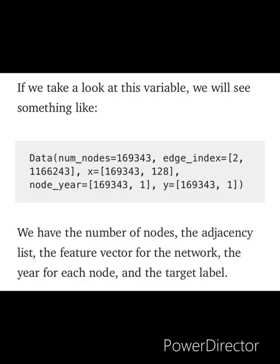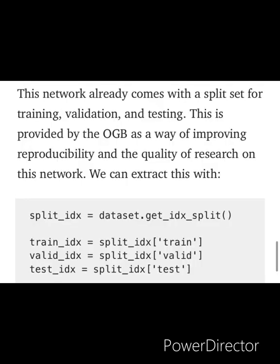The edge indices are passed into a function and we have the number of nodes and the adjacency list. This network already comes with a dataset that is already split for training, validation, and testing, which is often referred to as cross-validation. We can extract this using these four commands visible on your screen.